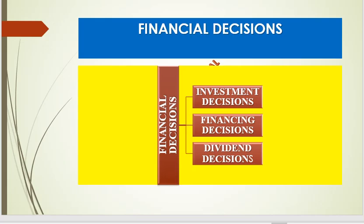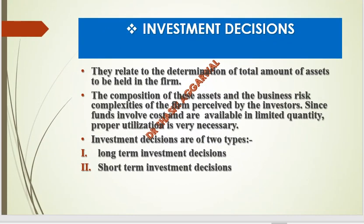The investment decision means the firm decides to invest the total amount in assets — we can see the total asset composition. The business risk is very important when the firm decides to invest in a project. We also have to see the cost of the funds. Long-term investment decisions involve fixed assets, which relate to our earning capacity.